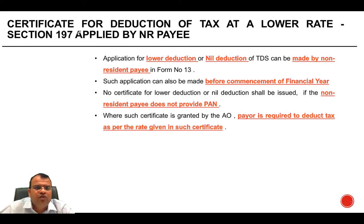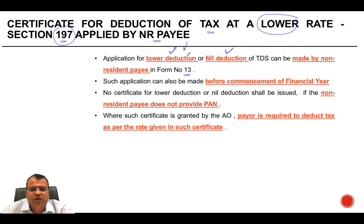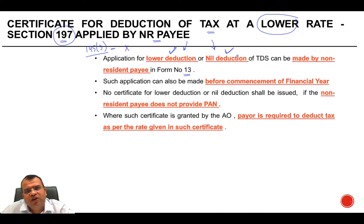The third mode through which a certificate for deduction of tax at a lower rate can be obtained is under Section 197, applied for by the non-resident recipient. The application for lower or nil deduction of TDS can be made by the non-resident payee in Form 30. Under Section 197, you can apply for both lower deduction or nil deduction of tax. Comparing this with Section 195(3), under that section lower deduction was not possible — only nil; here, both lower and nil deduction are possible.